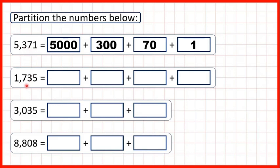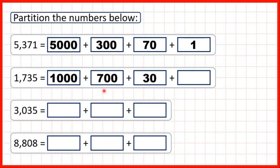Now let's do the same for one thousand seven hundred and thirty-five. This one is in our thousands, so that's one thousand. This seven is in our hundreds, so that stands for seven hundred. This three in our tens stands for thirty, and this five in our ones stands for five.